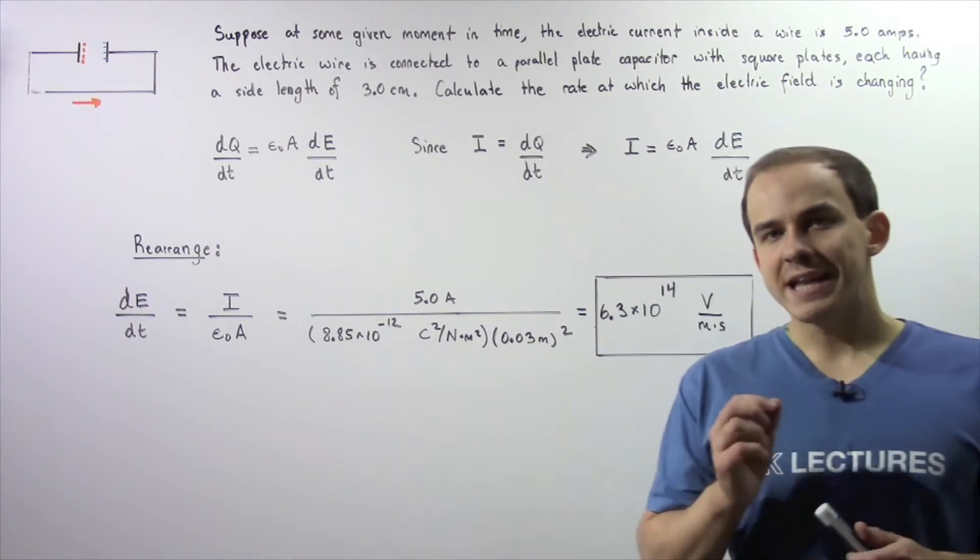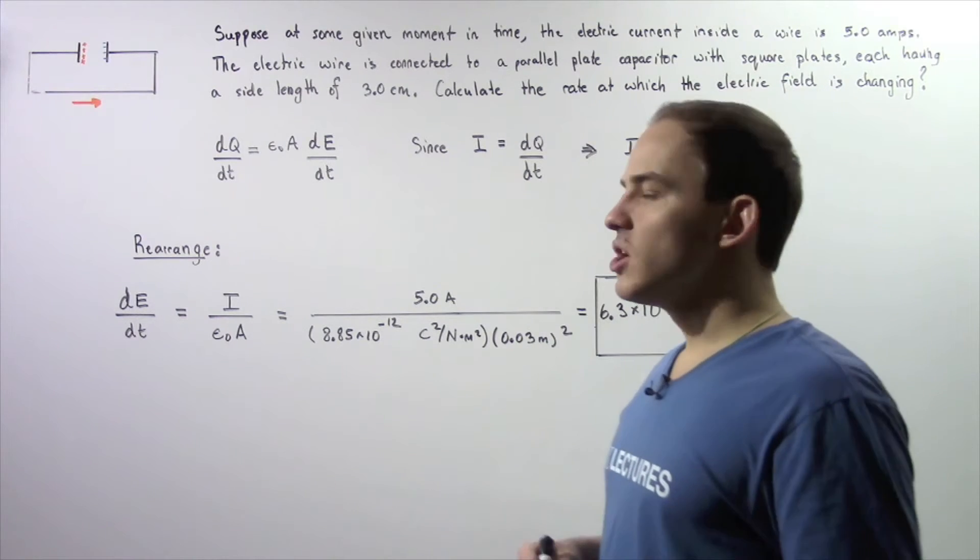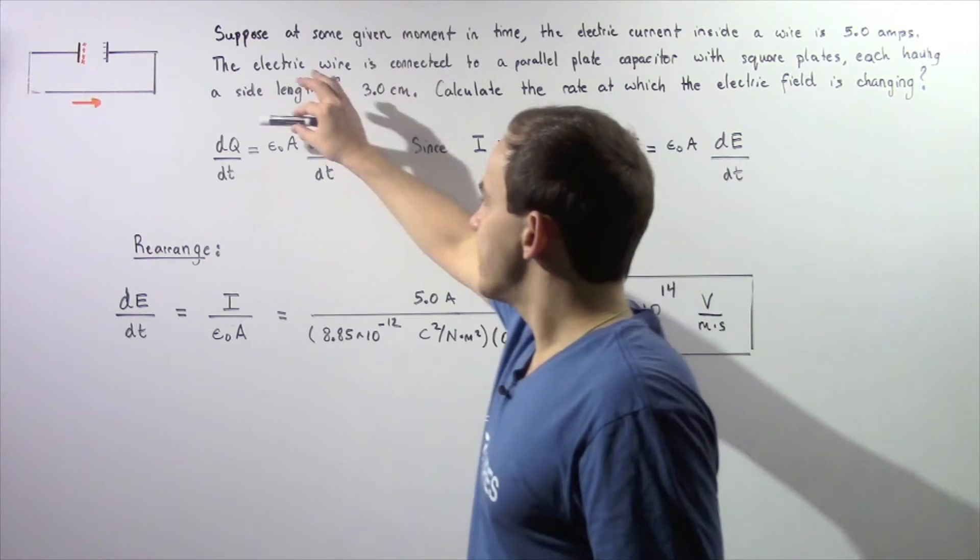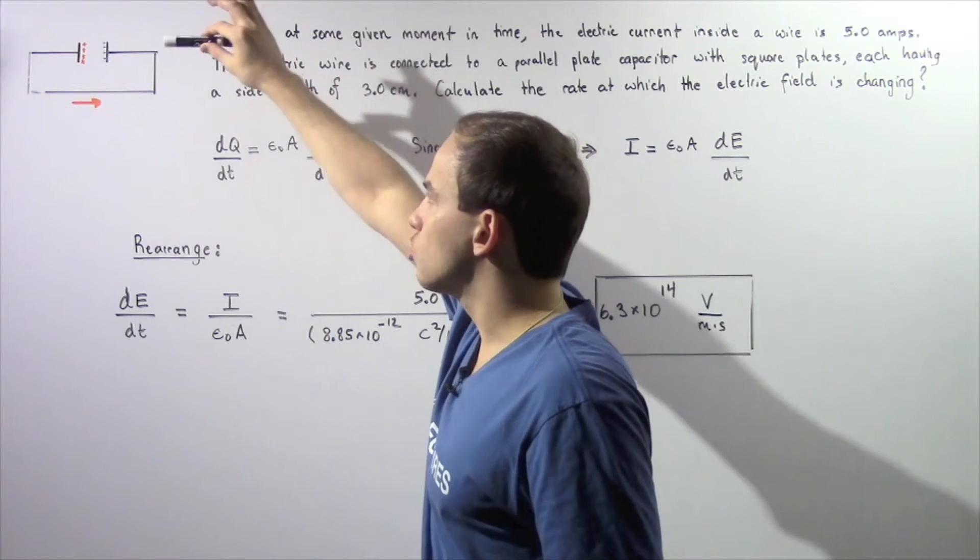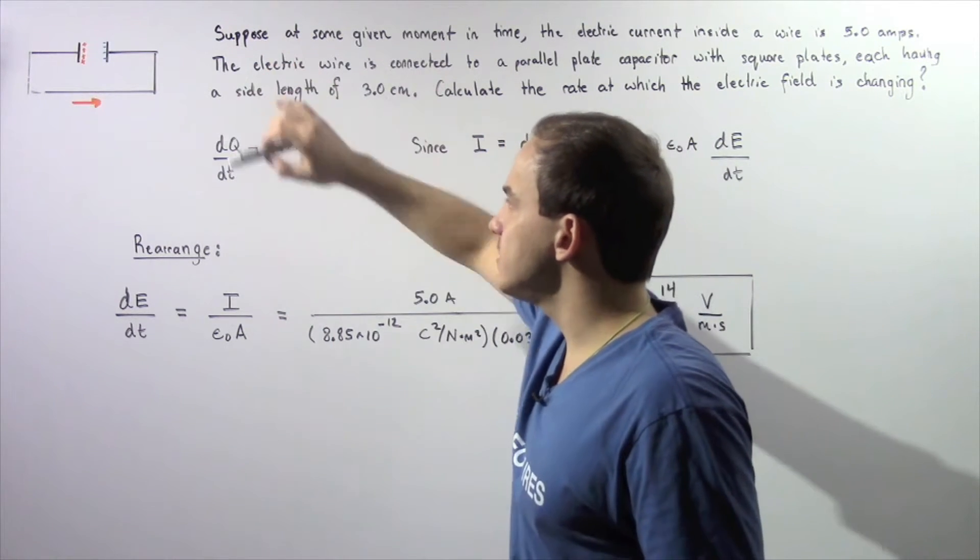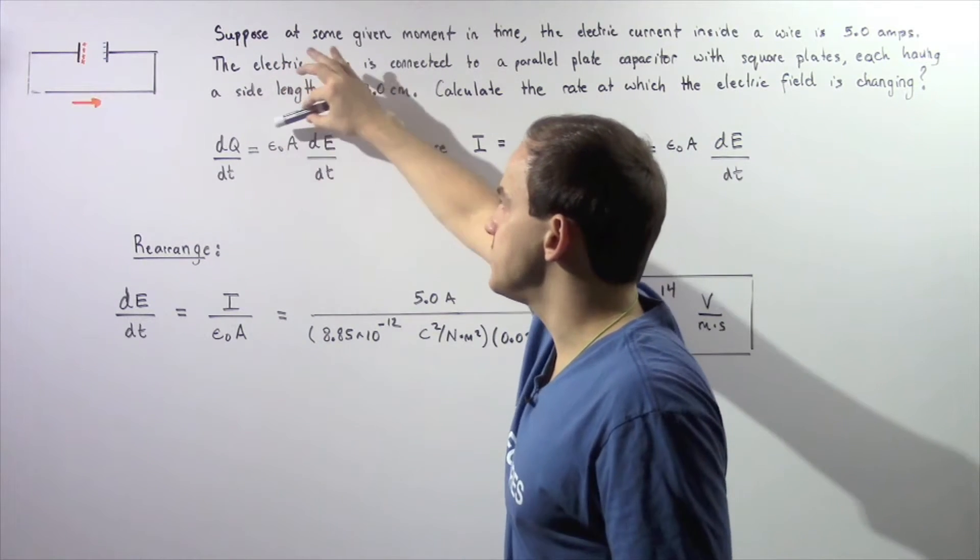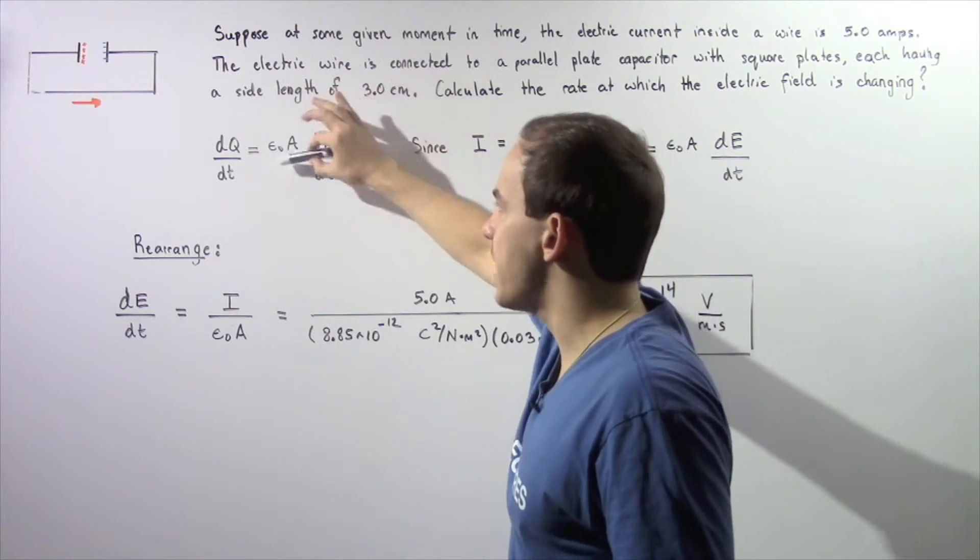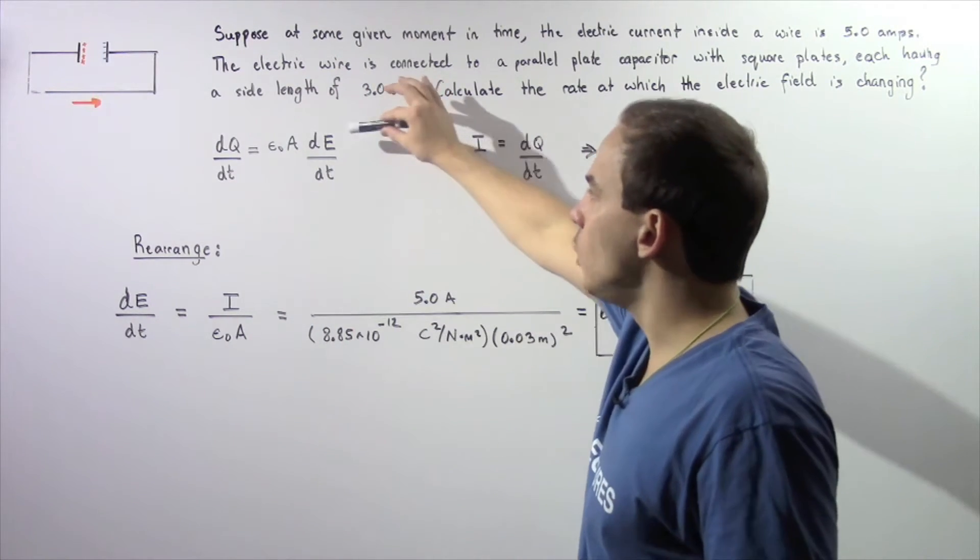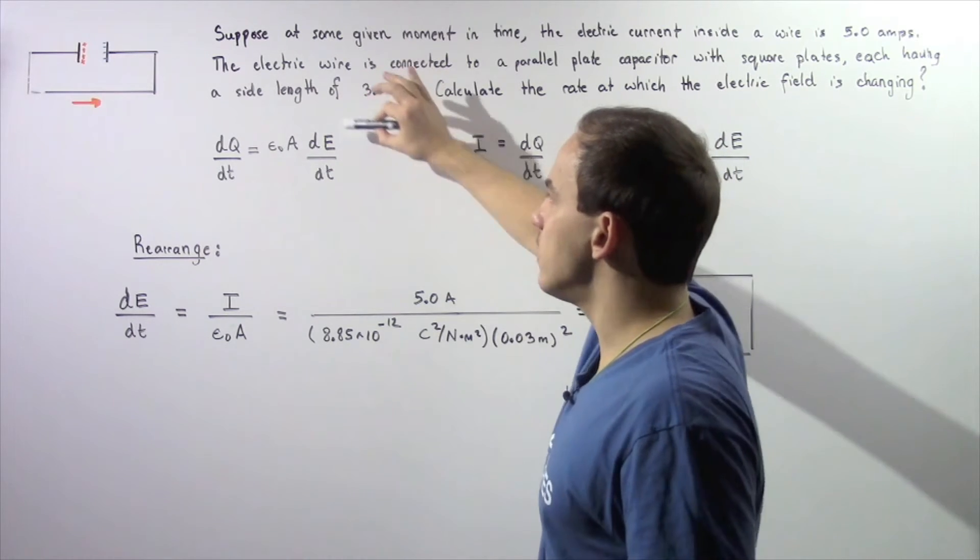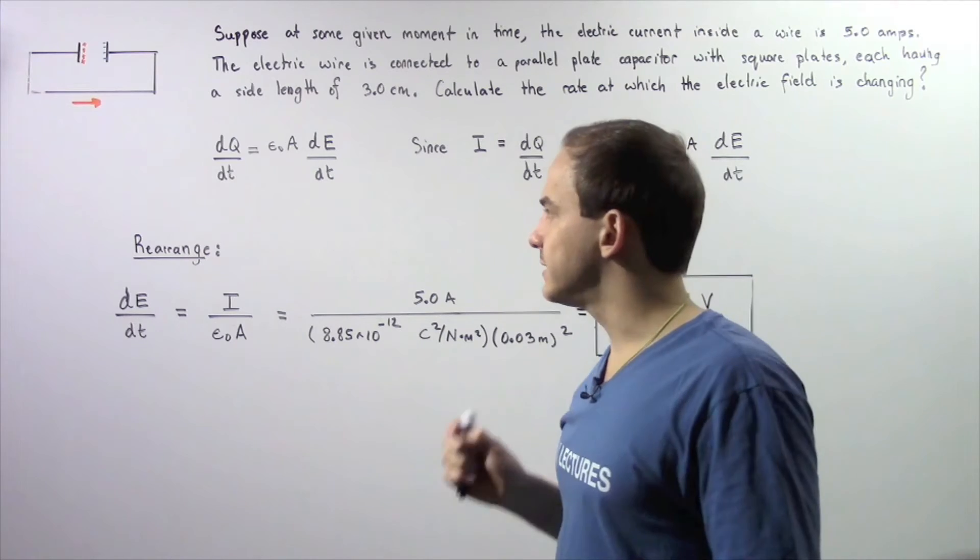In the previous lecture on the general form of Ampere's law, we were able to show that the rate of change of charge across a parallel plate capacitor is equal to the product of the permittivity of free space multiplied by the area of either one of the plates multiplied by the rate of change of the electric field with respect to time.